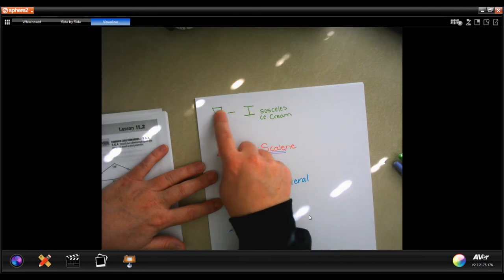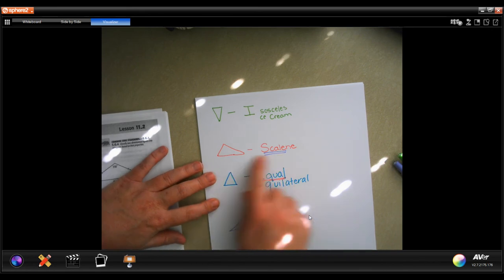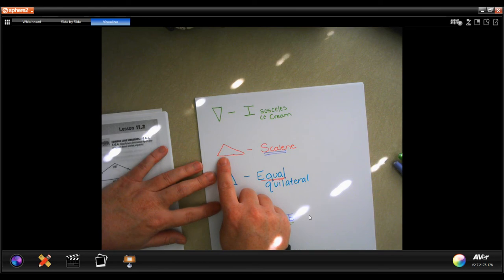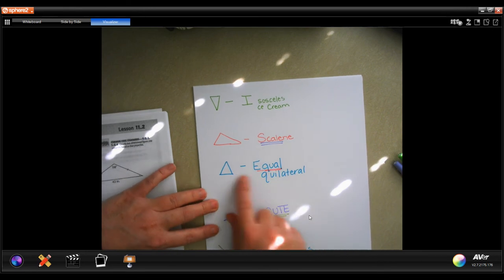An isosceles triangle looks like an ice cream cone. It has two sides that are the same and then it has one shorter one at the top. A scalene triangle, none of the sides are equal. One of them would tip the scale, one of them is heavier than all of them, and would tip the scale. That's how I remember scalene.